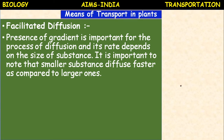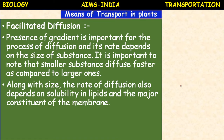Facilitated diffusion: the presence of a gradient is important for the process of diffusion. The rate depends on the size - smaller substances diffuse faster as compared to larger ones. This is the main concept involved in facilitated diffusion. It takes place from high concentration to low concentration along the concentration gradient.